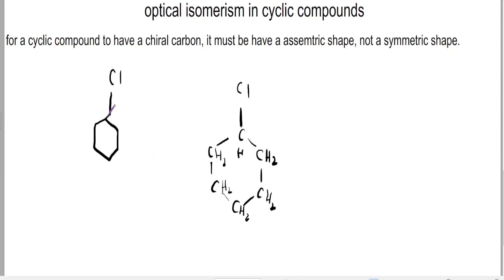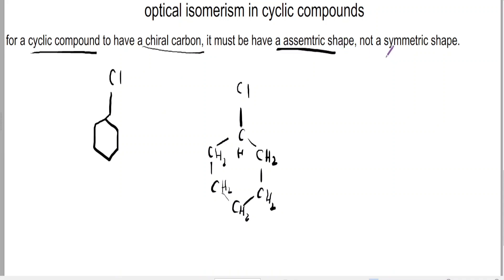In the last bit of optical isomerism, you need to be able to identify the chiral carbons in cyclic compounds. For a cyclic compound to be able to show chiral carbons, it must be asymmetric, not a symmetric shape.